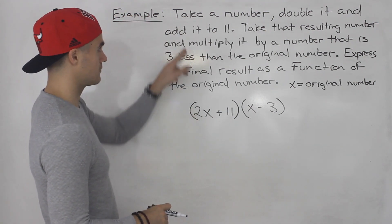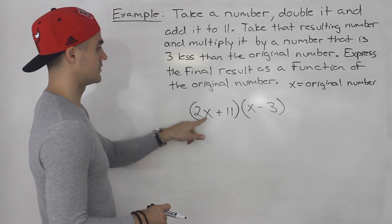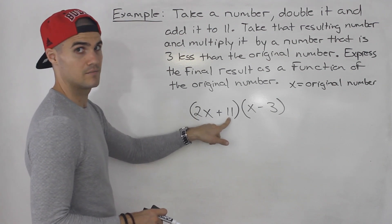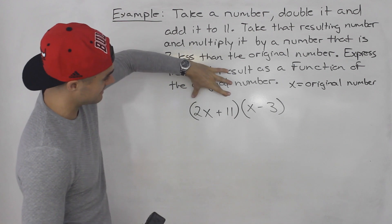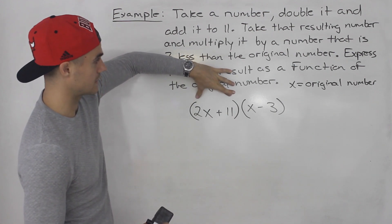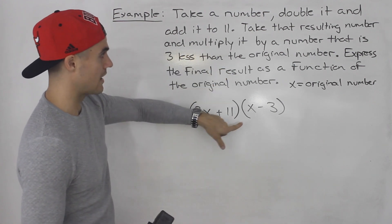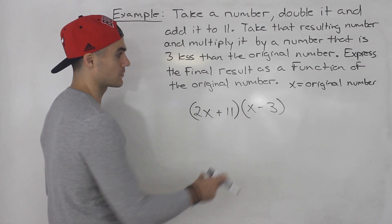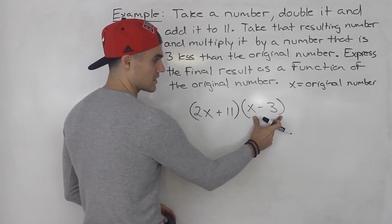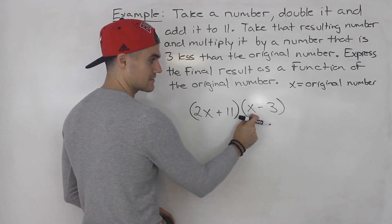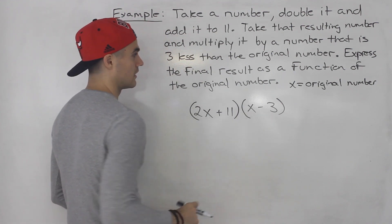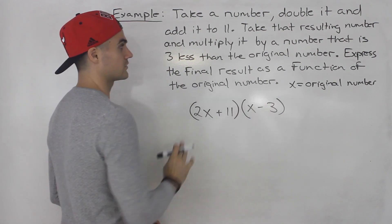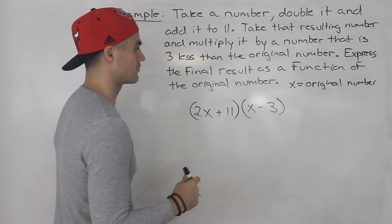Let's go through one more time: we're taking a number, doubling it, adding it to 11. Then we take that entire number in brackets and multiply it by a number that is three less than the original number. This bracket here represents a number that is three less than the original number. And we have to express the final result as a function of the original number.